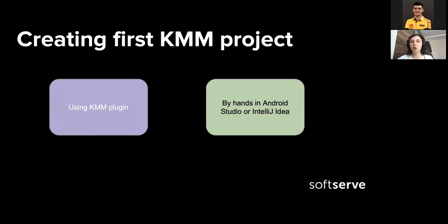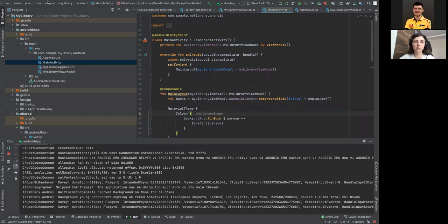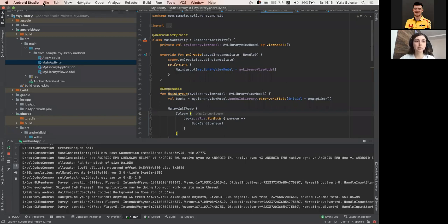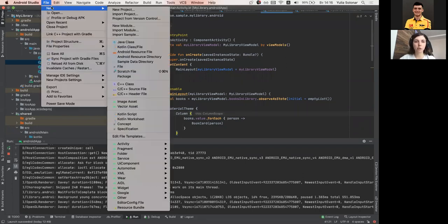Creating your first Kotlin Multiplatform Mobile project can be done using the KMM plugin or by hand in Android Studio or IntelliJ IDEA. I'll show you how to do it with the KMM plugin since it's faster. Here I already have a sample project, but we'll try to create a new project.